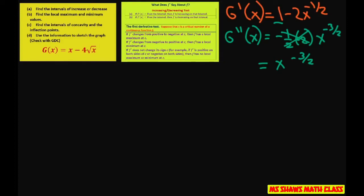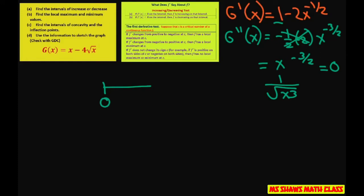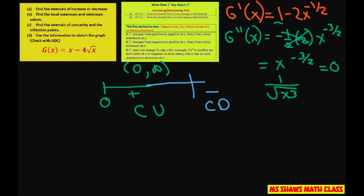Setting this to 0 — well, there's no solution, it's just undefined at 0. Since this is 1 divided by the square root of x cubed, it can't be less than 0. So we just want to know what's going on from 0 to infinity. If you plug in a positive number, this is going to be positive, which means it's concave upward. However, there are no inflection points, because to have an inflection point you need the concavity to change sign from positive to negative — and we don't have that.